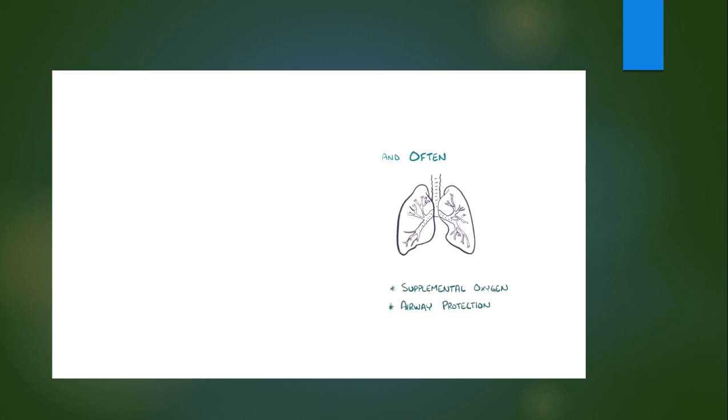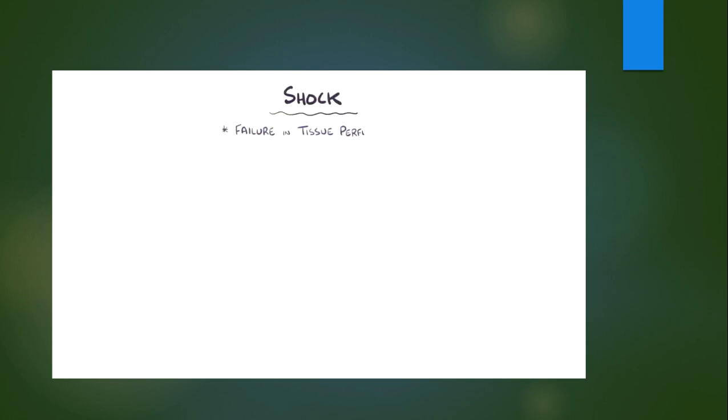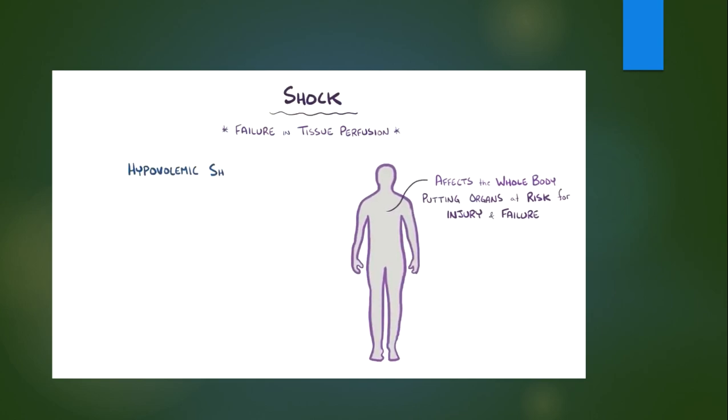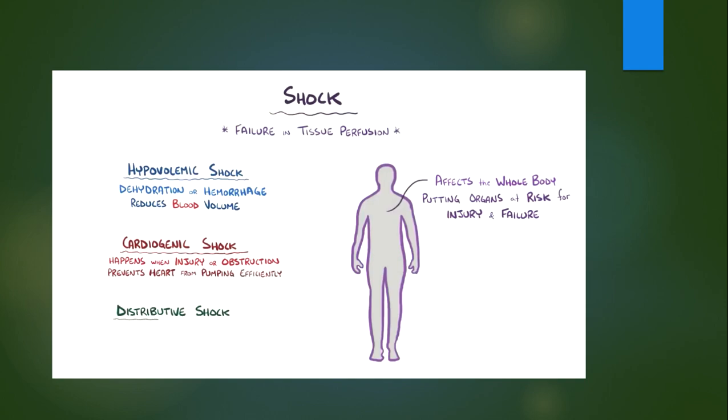As a quick recap, shock is ultimately a failure in tissue perfusion and it affects the whole body, putting tissues and organs at risk for injury and ultimately organ failure. Hypovolemic shock happens when dehydration or hemorrhage reduces the volume of blood in the blood vessels. Cardiogenic shock happens when a direct injury like a heart attack or an obstruction like a pericardial effusion prevents the heart from pumping blood efficiently. Distributive shock happens when something like an allergic reaction or damage to the nervous system, called neurogenic shock, causes the blood vessels to vasodilate and become leaky, which reduces the resistance and lowers the blood pressure.